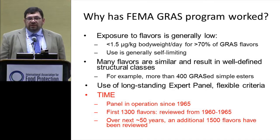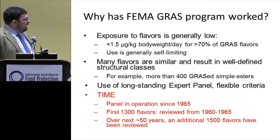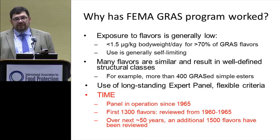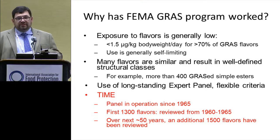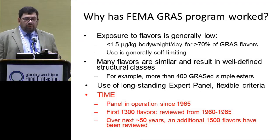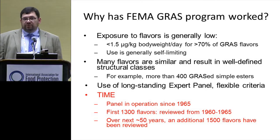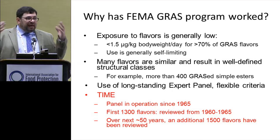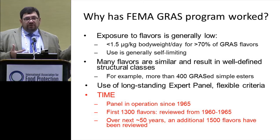The FEMA GRAS program has also worked because we've been at it a long time. The panel has been in operation formally since 1965, and FEMA began developing information on flavoring substances formally since 1960. In that first five-year period, the expert panel looked at 1,300 different flavors, published as the GRAS III publication. Over the next 50 years, roughly an additional 1,500 flavors have been reviewed — roughly 30 flavors per year. Not everybody has been able to do that, which is why we require innovative approaches like the TTC.